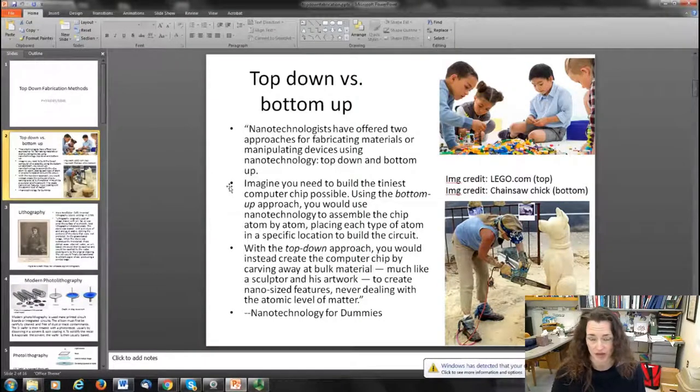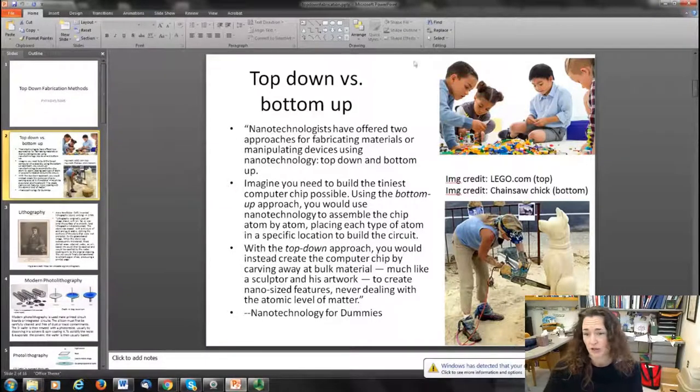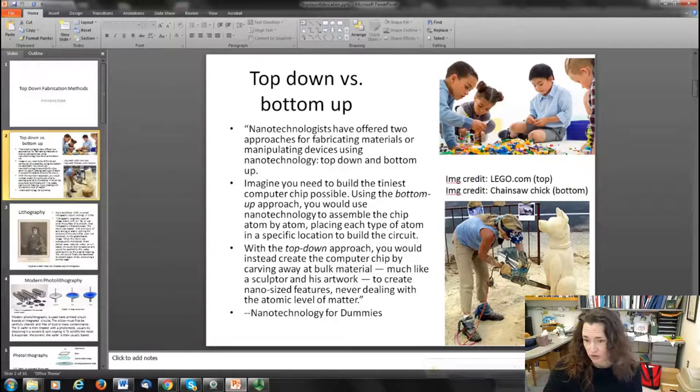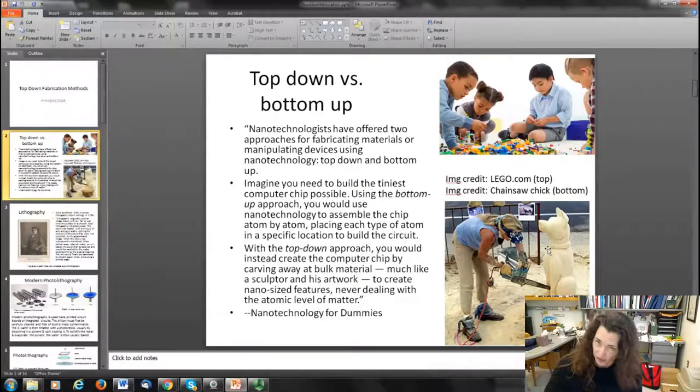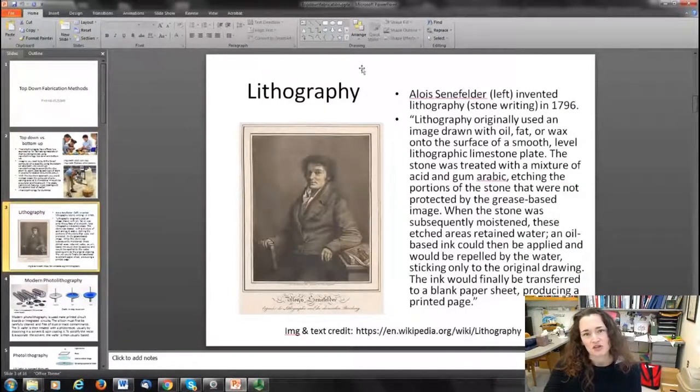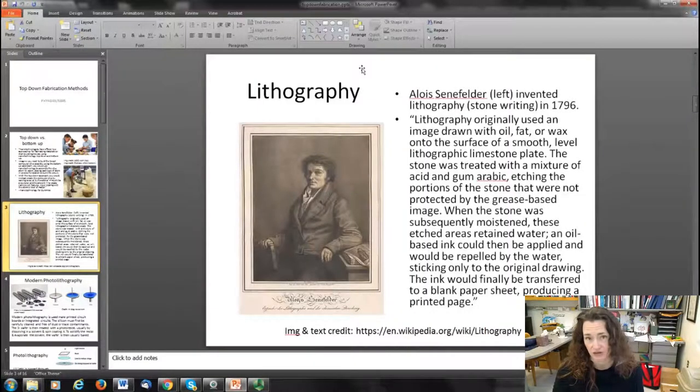To contrast those two approaches from a macro scale view, the bottom-up approach might be like building things with Legos brick by brick, whereas the top-down approach might be like doing a chainsaw carving, which is kind of fun. So one of the first and super important top-down fabrication methods I'd like to talk about today is nanolithography.